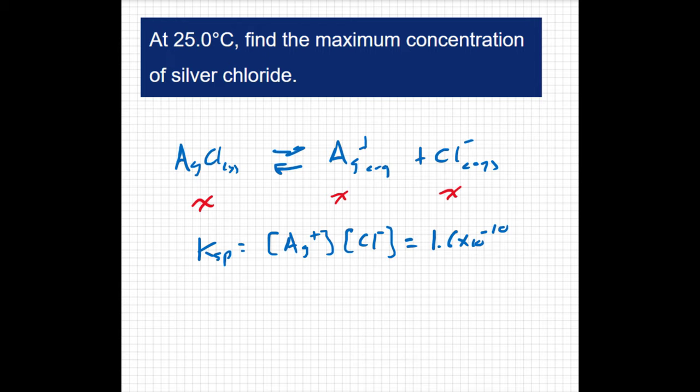I can say 1.6 times 10 to the negative 10 equals the concentration of silver, which we've called X, times the concentration of chloride, which is also X. I can say that equals X squared. So solving for X, I get X equal to 1.3 times 10 to the negative 5. And X is representing a concentration, so I'm going to use my units of molarity.